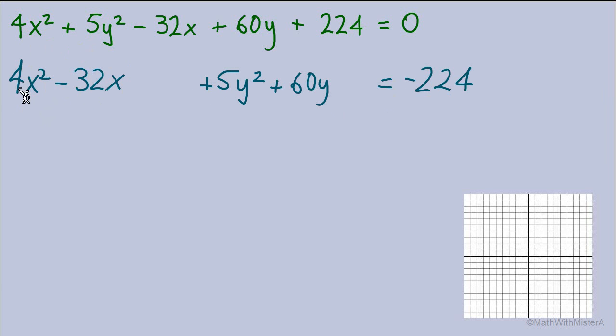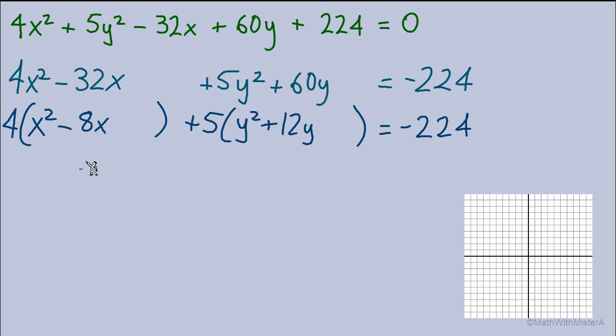Let's begin completing the square. Group together the terms with x and then the terms with y, and I'll move the constant to the right side. Next, to complete the square we need to factor off the coefficient of the x squared or the y squared. Starting with the x, 4 factored out leaves us with x² - 8x. And from the y variable, factoring out a 5 leaves us with y² + 12y.